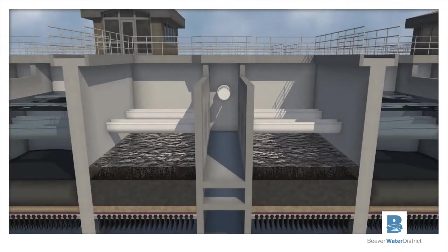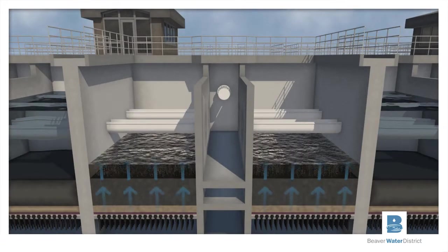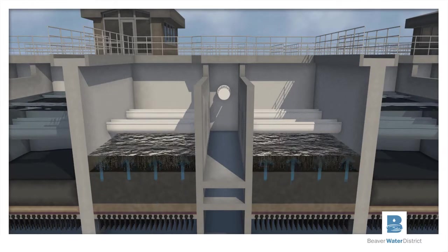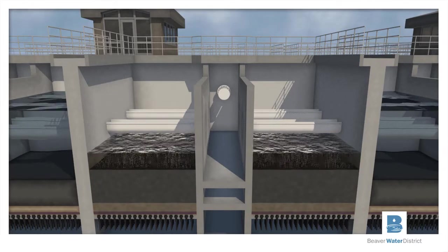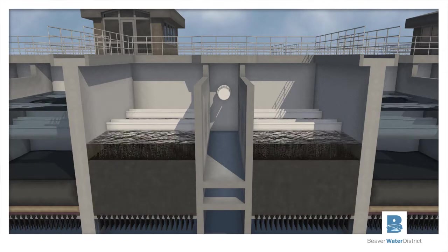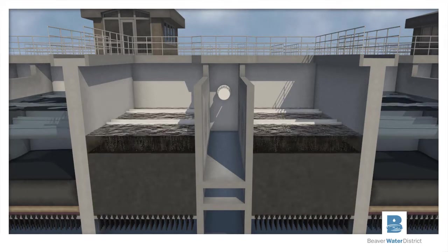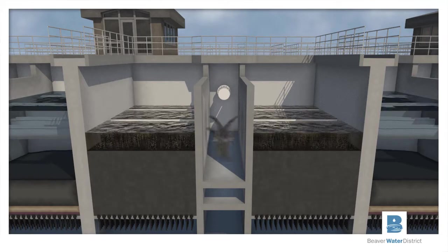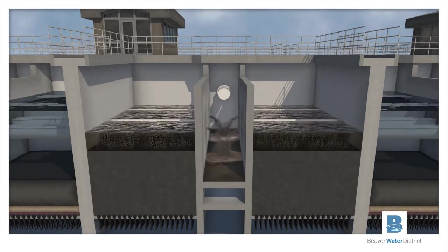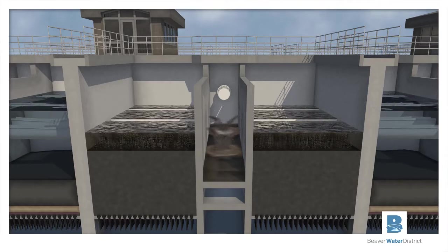The filters are periodically cleaned in a process referred to as backwashing — the forcing of water in reverse from the bottom to the top of the filters. This process tends to strongly mix the filter media, causing the dirt that was trapped in the media to be released and rise to the top, where it is collected by the backwash troughs and sent to the solids handling facility.